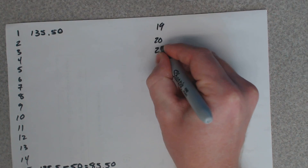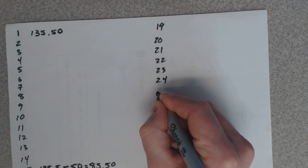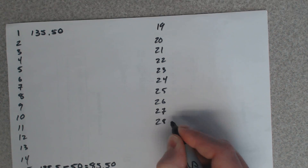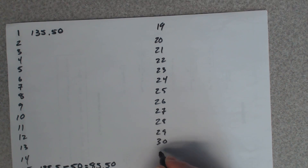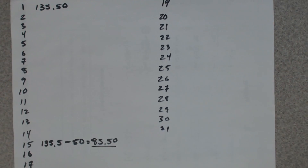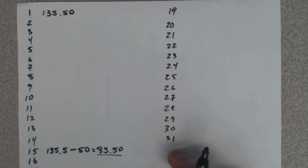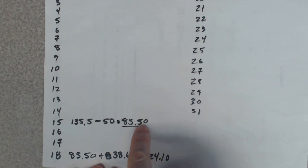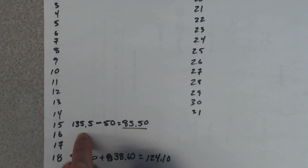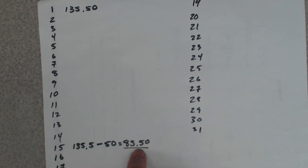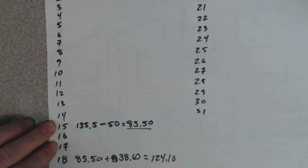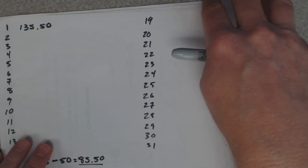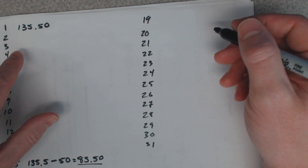He carries $124.10 from the 19th through the 31st: the 19th, 20th, 21st, 22nd, 23rd, 24th, 25th, 26th, 27th, 28th, 29th, 30th, and 31st — the month ends on the 31st. So let's count up how many days each balance was carried, because rather than adding each day individually, there's a shortcut.